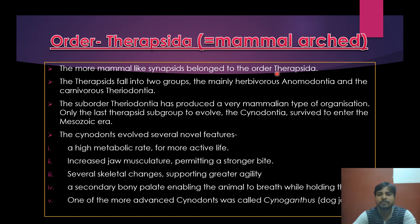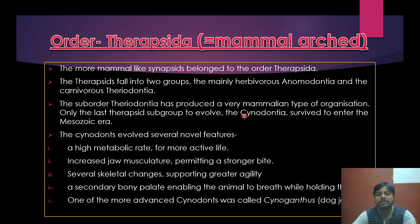The order Therapsida, called mammal-like reptiles, is where the more mammal-like synapsids belong. Therapsids are divided into two main groups: the herbivorous Anomodontia and the carnivorous Theriodontia. Theriodontia produced a very mammalian type of organization. Only the last therapsid subgroup to evolve — the Cynodontia — survived to enter the Mesozoic era.